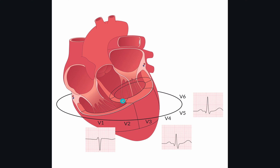After the septum has depolarized, normally the left and right ventricle depolarize simultaneously. The direction of depolarization goes from inside to outside — from the endocardial side to the epicardial side. For the left ventricle that is in one direction, and for the right ventricle in the opposing direction. So we have simultaneous opposing electrical forces, and since the left ventricle is way stronger than the right ventricle, normally the left ventricle wins.